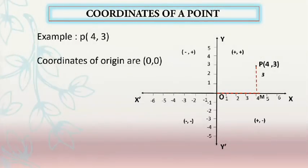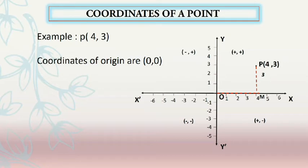For example, the coordinates of point P are (4, 3). Remember that the coordinates of the origin are (0, 0). Regarding the sign convention: in the first quadrant, both X and Y coordinates are positive; in the second quadrant, X is negative and Y is positive; in the third quadrant, both X and Y are negative; and in the fourth quadrant, X is positive and Y is negative.